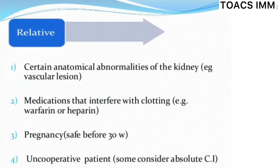Relative contraindications include: number one, certain anatomical abnormalities of kidneys, for example vascular lesions; number two, medications that interfere with clotting, such as warfarin and heparin; and number three, pregnancy before 30 weeks, or an uncooperative patient. Some consider these absolute contraindications.